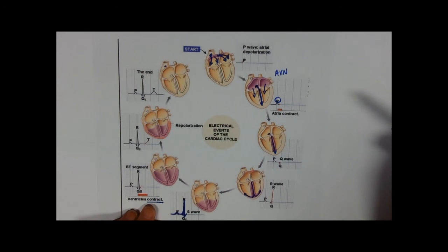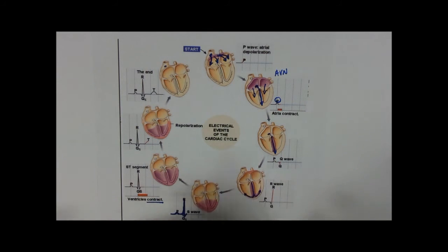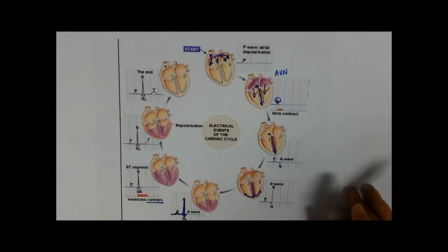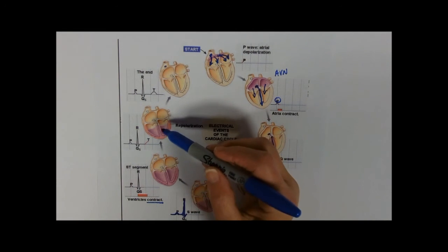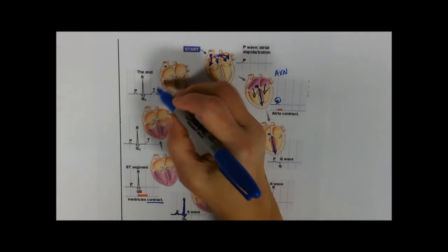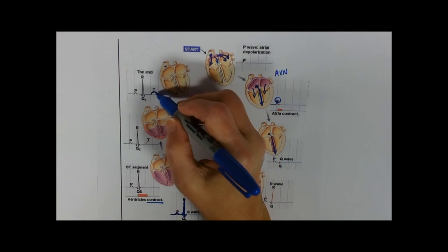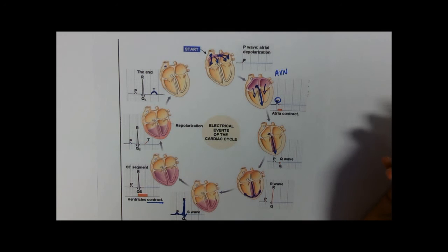Now you'll remember from the cardiac cycle video that as the ventricles are contracting, this QRS spike, the atria will be repolarizing, they're relaxing. And that would cause a wave, but it doesn't because it's masked by this enormous spike of electrical activity, because the ventricles are so big. However, as the ventricles start to relax, that wave of excitation is disappearing, and that causes this little T wave at the end, and that represents the repolarization of the ventricles.